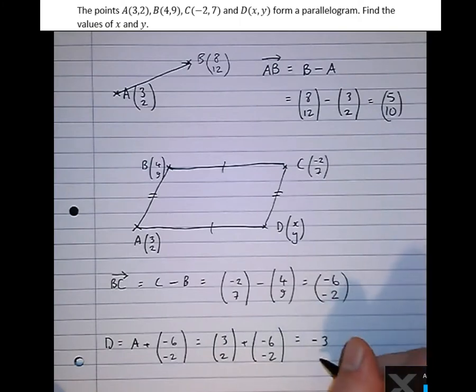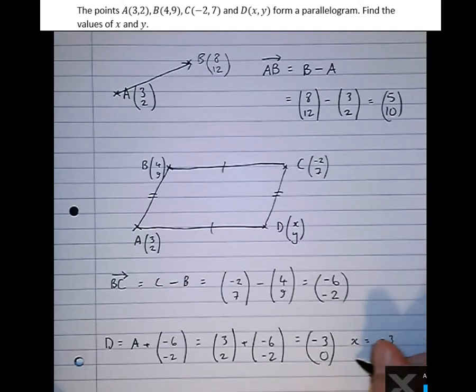which gives us (-3), and -2 plus 2 is 0. So in this case we can now say x equals -3, and y equals 0.